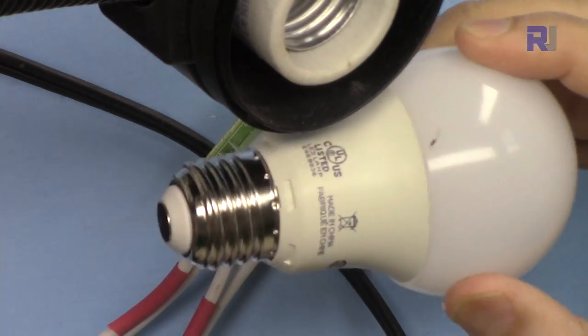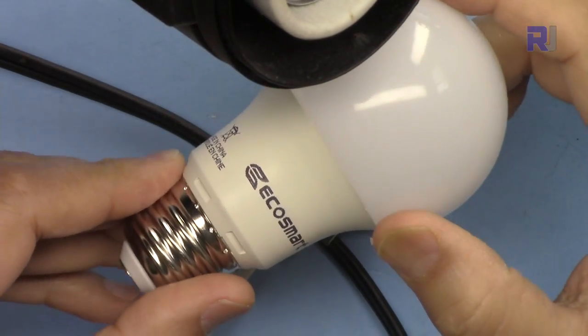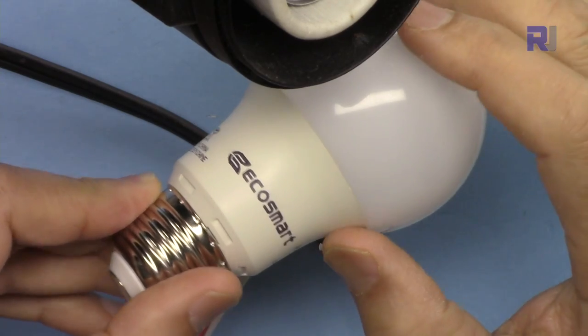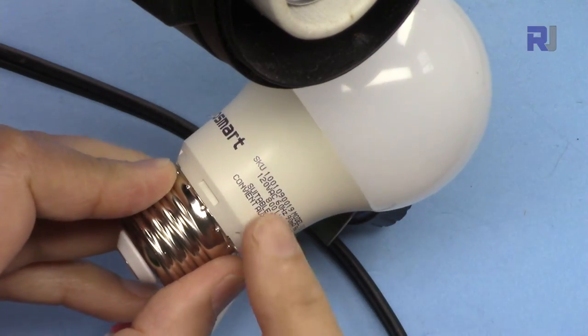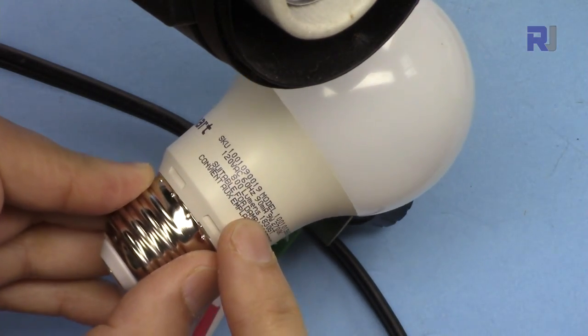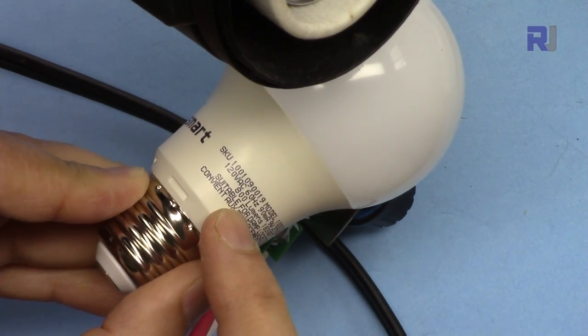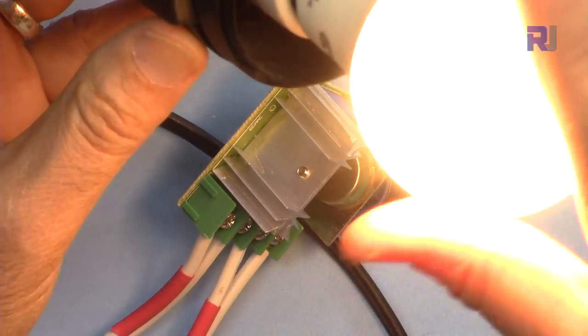Now I'm connecting a different bulb. This is a different brand, EcoSmart 120 volts, 19 milliampere, that's 800 lumens. It is now at the maximum.